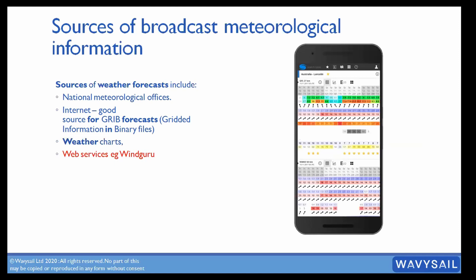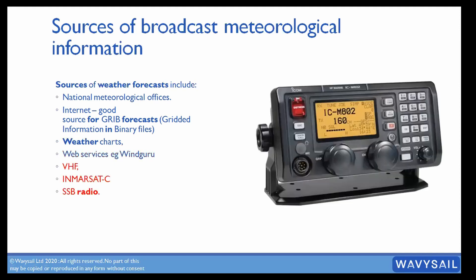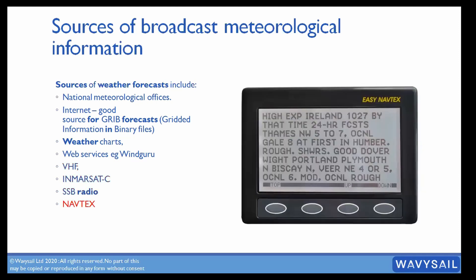Cell phone weather reports are basically companies taking national weather data and making it easy for you to use. At sea we get VHF, EMOS, SSB, and radio reports from all the land-based stations. We also get them in text format from NAVTEX. If you look at this one — it's a UK coast report — it gives us barometric pressure, our forecast, and then literally goes through what the forecast is going to be.